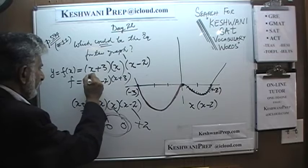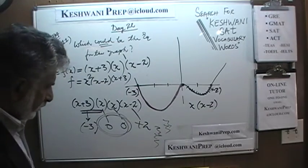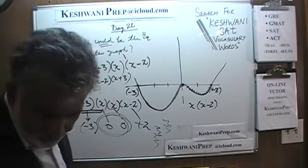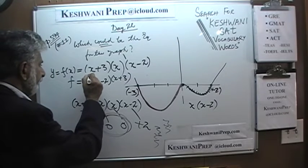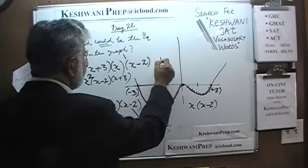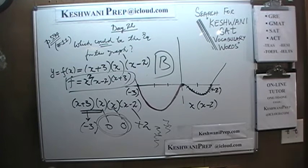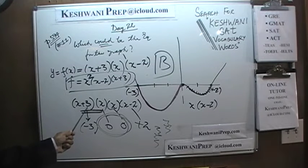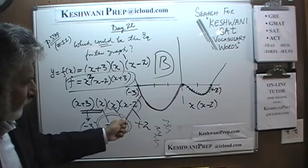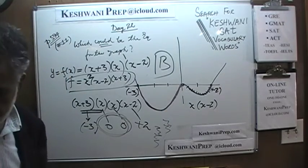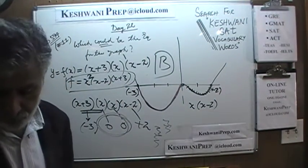The correct answer is not A. Because the x at the origin is x squared, the correct answer is B: y = x²(x−2)(x+3). It comes from the fact that the graph has four solutions — negative 3, 0, 0, and positive 2 — and those two zeros at the origin give us the x squared. Do you understand?